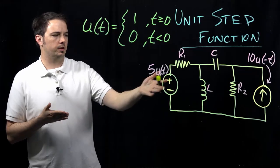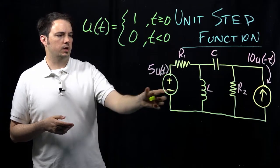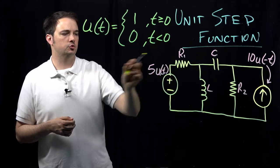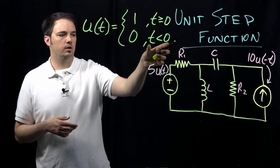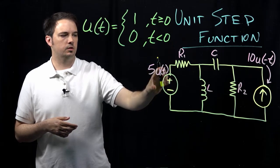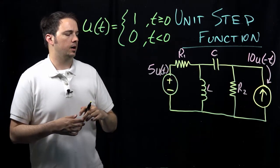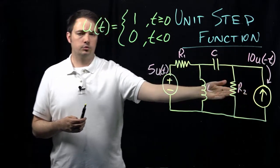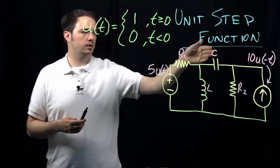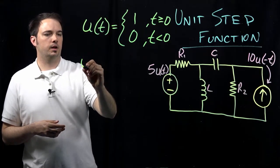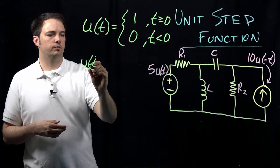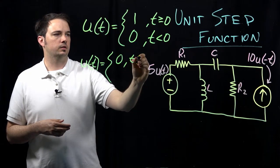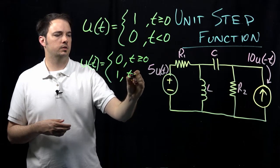Thinking about how it applies to the sources: take this voltage source — the voltage is 5 times the unit step function u(t). So for any time less than 0, the unit step function equals 0, which means this voltage source has a voltage of 0. The current source is the inverse of the function: 10 times u(-t). Due to the minus sign, u(-t) gives the opposite outcome — it equals 0 for t greater than or equal to 0, and equals 1 for t less than 0.